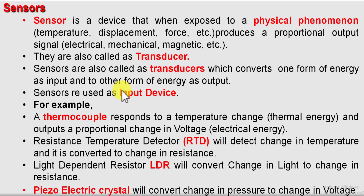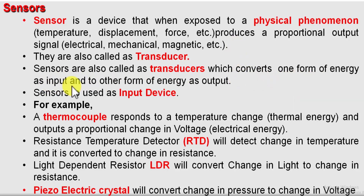Now what does a sensor basically do? The sensor converts any physical phenomena — it can be temperature, displacement, force, light, pressure — any such physical parameter is converted into a proportional electrical, mechanical, or magnetic signal. So basically they convert one form of energy to another form. The sensors are also called as transducers. Take an example of a mic — a mic is a simple transducer which converts your sound into electrical signal.